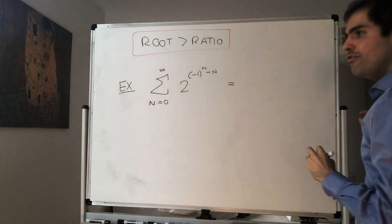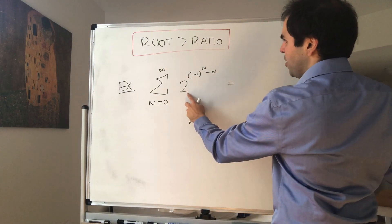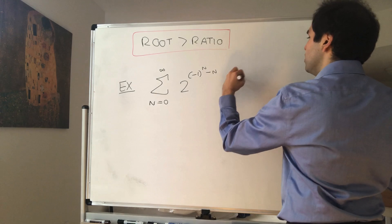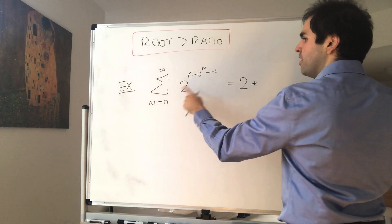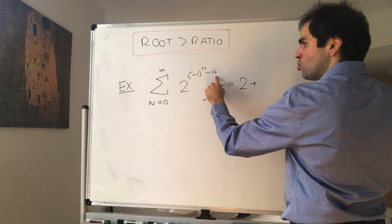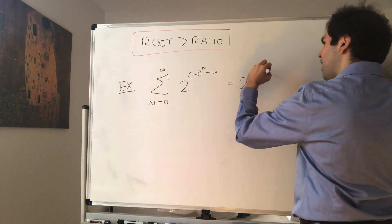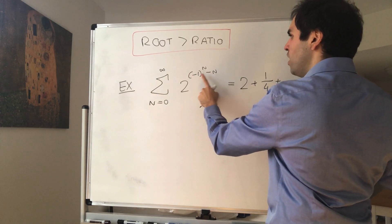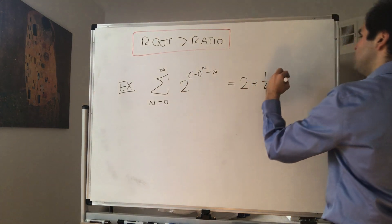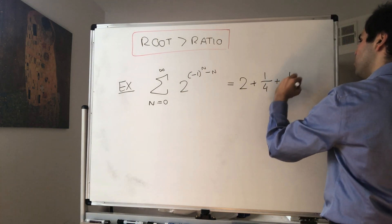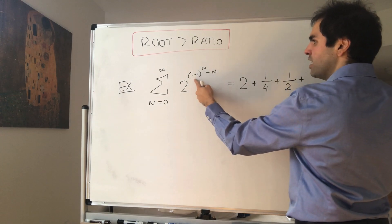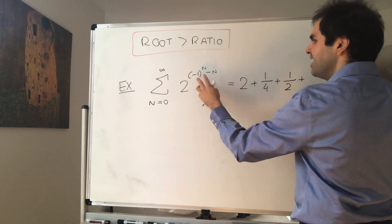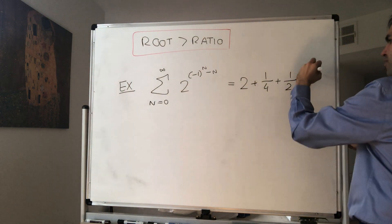Let's calculate a couple of values. For n=0, we get 1 minus 0, so 2^1 = 2. For n=1, we get -1 minus 1 = -2, and 2^(-2) = 1/4. For n=2, we get 1 minus 2 = -1, giving 2^(-1) = 1/2. For n=3, we get -1 minus 3 = -4, and 2^(-4) = 1/16.